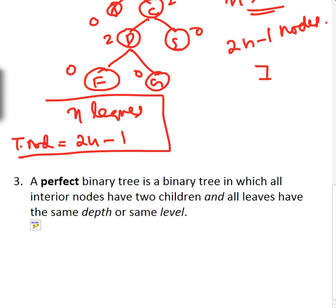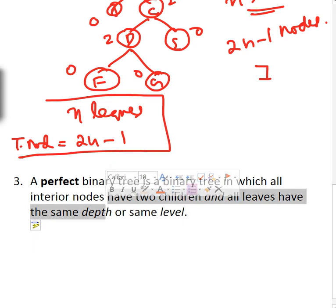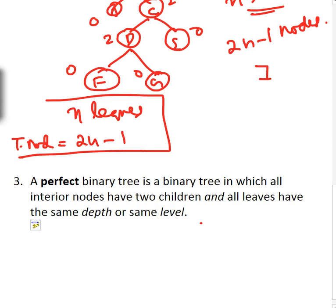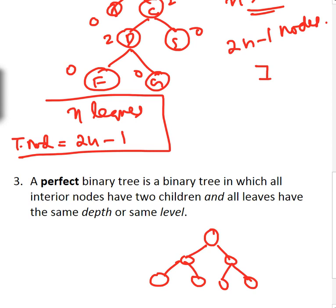Next is the perfect binary tree, in which all internal nodes have two children and all leaves are at the same depth or same level. For example, a root with two children where the leaves are all on the same level. All interior nodes have exactly two children, and all leaves share the same level. Some authors call this a complete binary tree instead.